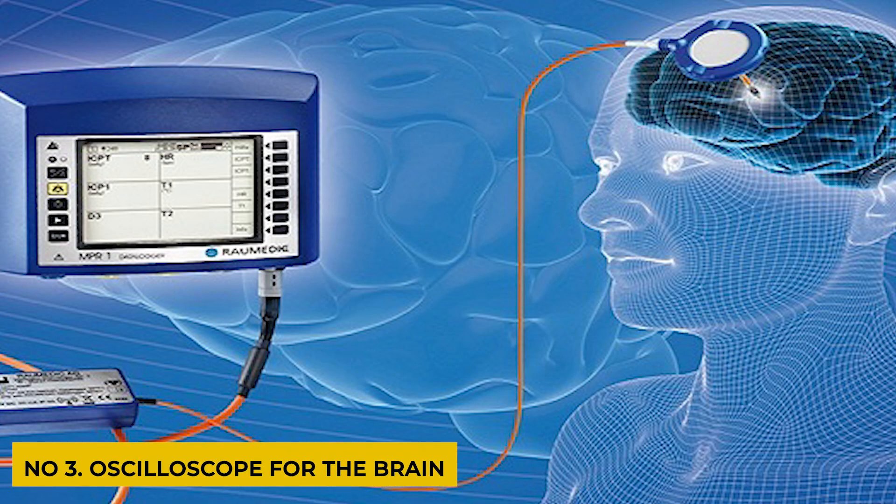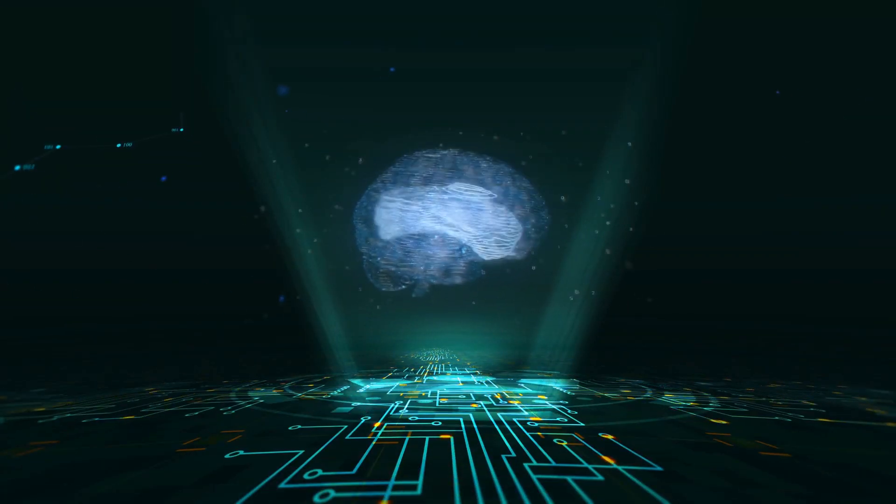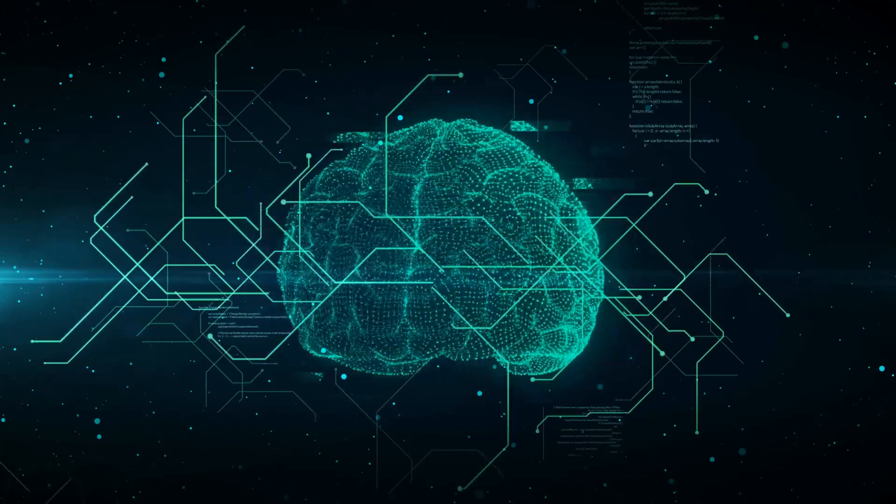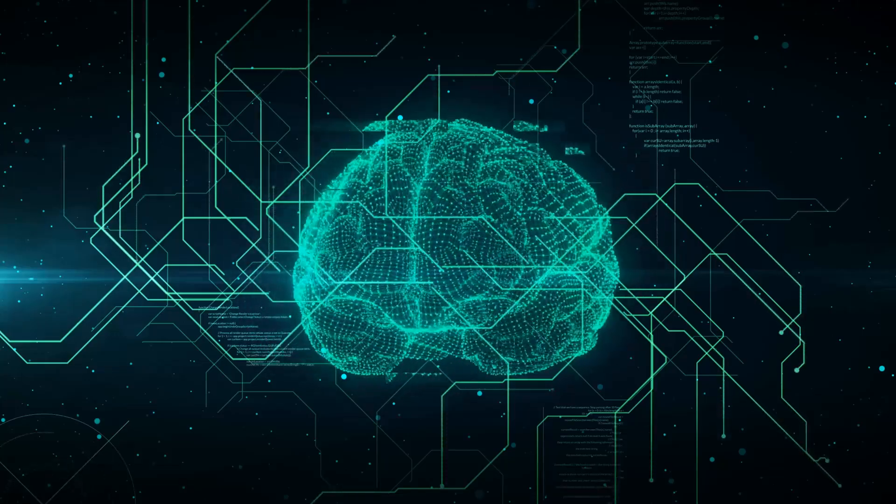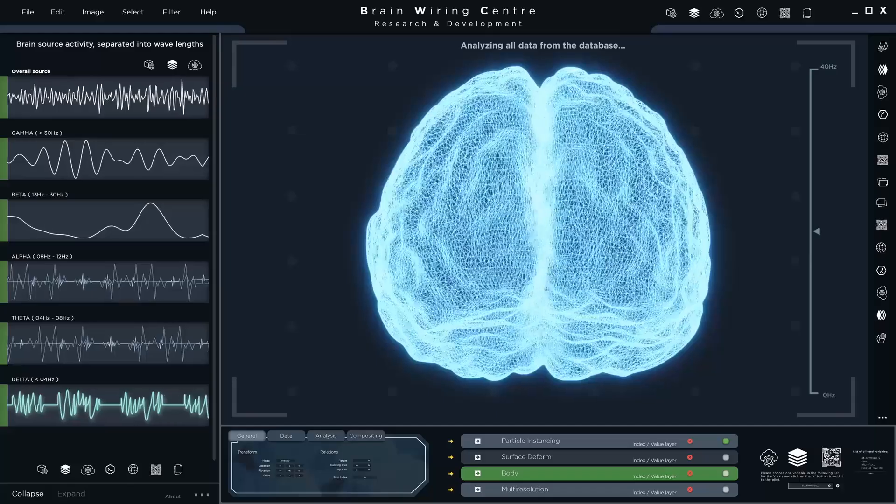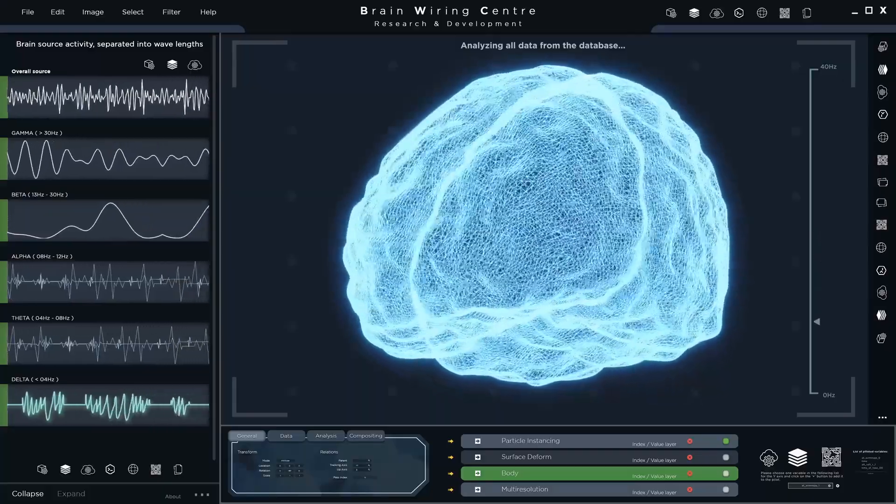Number three is an oscilloscope for the brain. Oscilloscopes show information about printed circuit boards visually on PCBs. Similarly to this, the Neuralink device can illuminate a variety of brain activities. One of the team members commented the side effect of this device is you'll wind up learning a ton about how the brain works.